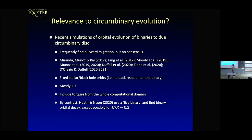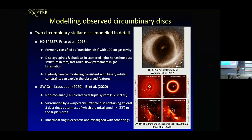There's at least one exception: Heath and Nixon use a live binary — equal and opposite forces — and they find mostly orbital decay, except possibly for extremely thick disks with H/R of about 0.2. I think you want to think carefully about this, because we had this exact problem 20 years ago in the planet case.